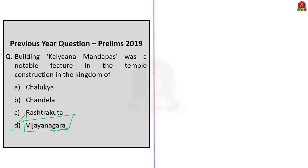For additional information: the Chalukya kingdom was a classical Indian dynasty that ruled large parts of southern and central India between the 6th and 12th centuries. The Chandelas were a royal dynasty in central India who ruled most of the Bundelkhand region between the 9th and 13th centuries. The Rashtrakutas were a royal dynasty ruling large parts of the Indian subcontinent between the 6th and 10th centuries. We will discuss the Vijayanagara Empire further in the news article discussion.